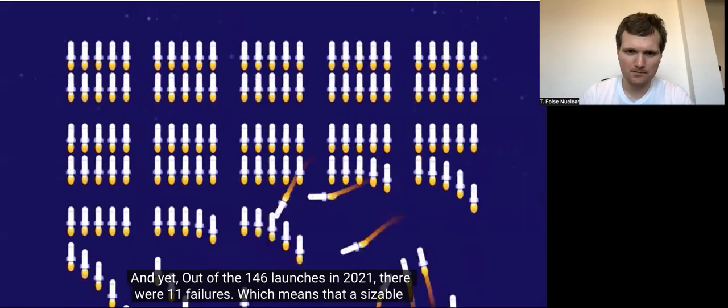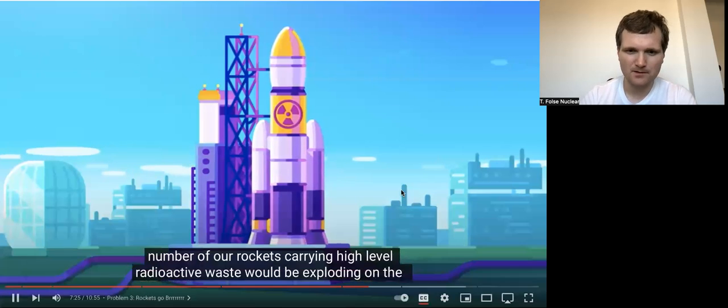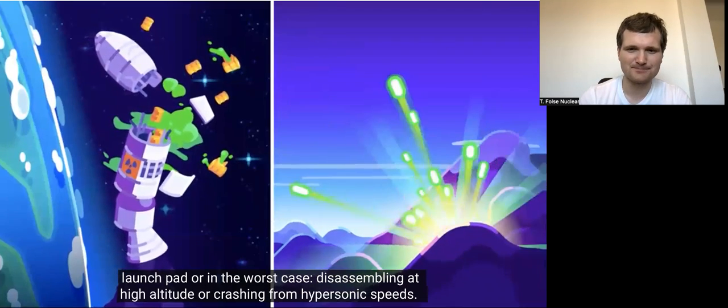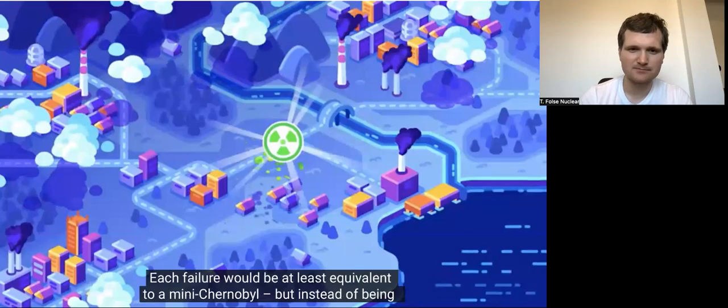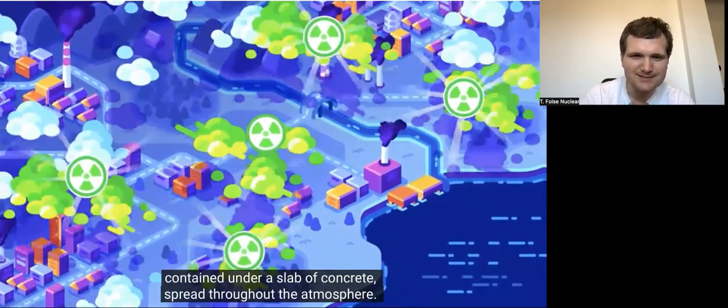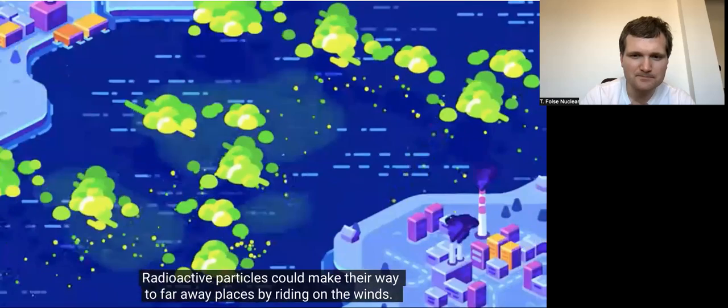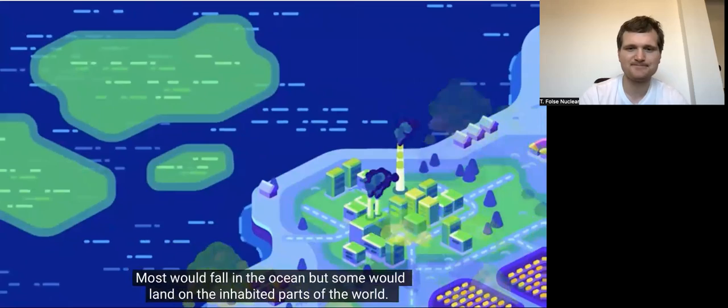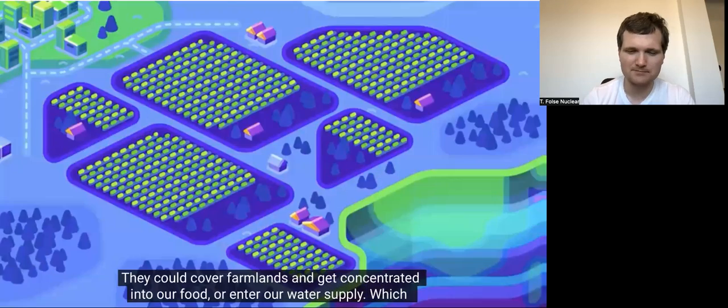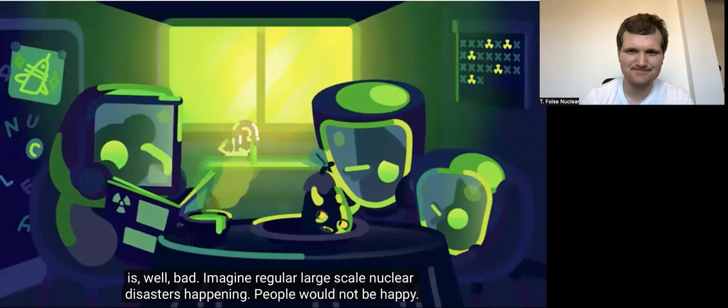Which means that a sizable number of our rockets carrying high-level radioactive waste would be exploding on the launch pad, or in the worst case, disassembling at high altitude or crashing from hypersonic speeds. Each failure would be at least a little bit of a miniature Chernobyl, but instead of being contained under a slab of concrete, spread throughout the atmosphere. Radioactive particles could make their way to faraway places by riding on the winds. Most would fall into the ocean, but some would land on the inhabited parts of the world. They could cover farmlands and get concentrated into our food or enter our water supply, which is, well, bad. Imagine regular large-scale nuclear disasters happening. People wouldn't be happy.